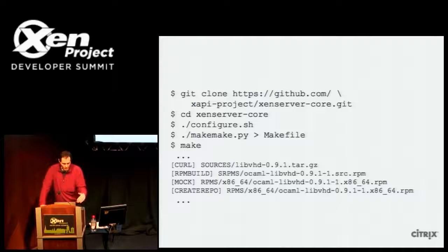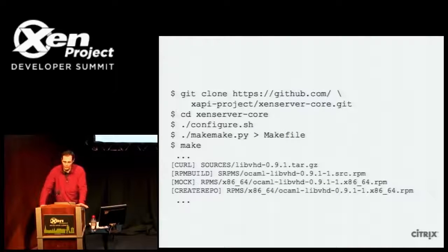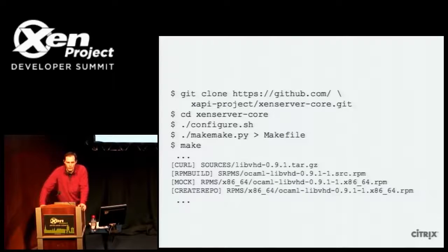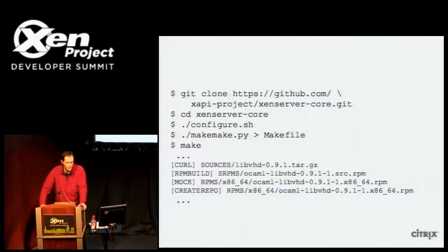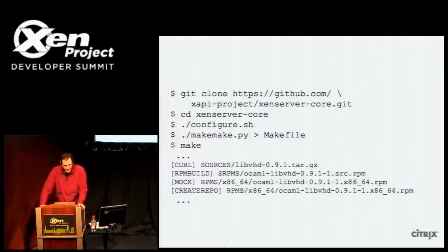What you'll find is it will download the sources for each component from their respective upstream repositories. In the case of all the Citrix components, that's GitHub again. We tag versions of our trunk builds on a fairly regular basis, and XenServer Core points at those tags, so what you get is a curated snapshot of trunk of at least our components. You'll also find some spec files for components which do exist upstream, but unfortunately we have to rebuild them because, for example, in Ubuntu we don't have a new enough OCaml compiler. The build takes about an hour or so on Ubuntu and about an hour and 20 minutes or so on CentOS, depending on your machine.